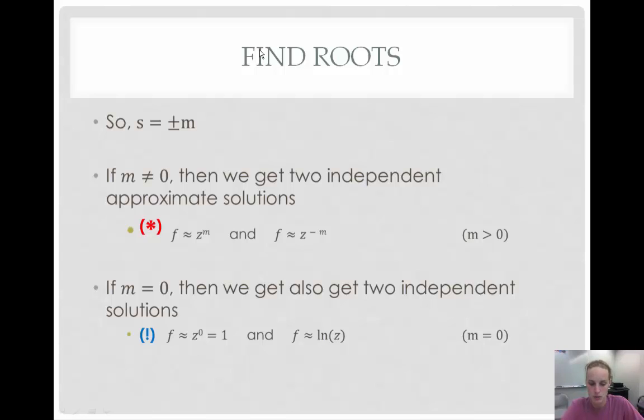Now, if m is equal to zero, then we also get two independent solutions. But, the first one is z to the zero, which is one, and the second one is when f is equal to ln of z.